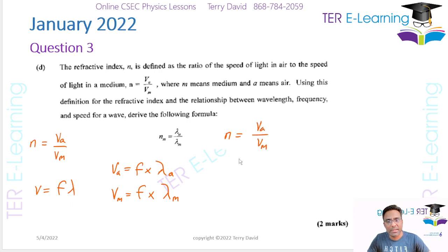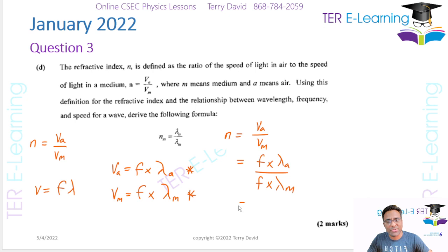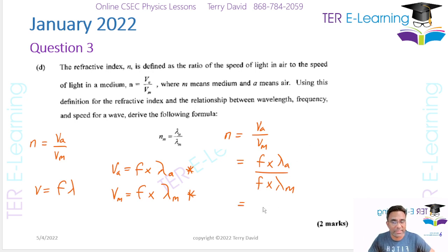So va equals f times λa and vm equals f times λm. Since n equals va over vm, we replace both with these expressions: n equals f·λa over f·λm. The f's cancel because when a wave travels from one medium to the next there is no change in frequency, so this becomes λa over λm. Two marks just for that.